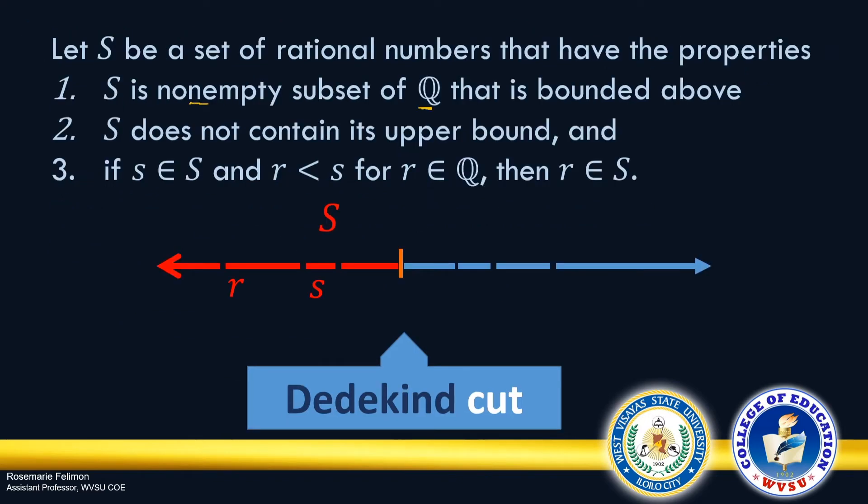Now, our narrative will focus on Dedekind cut. Let S be a set of rational numbers that have the following properties. Number 1, S is a non-empty subset of Q that is bounded above. Number 2, S does not contain its upper bound.